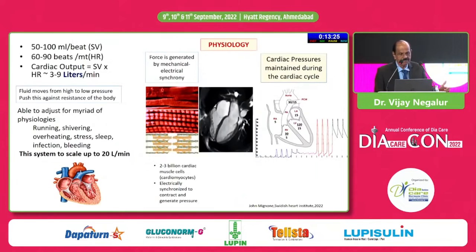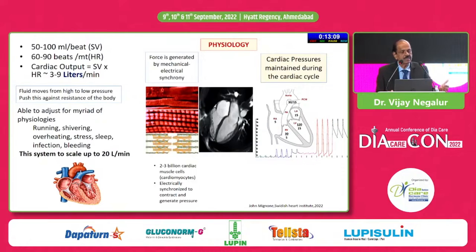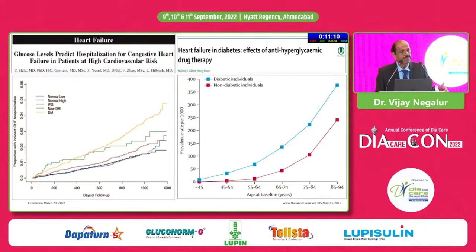Looking at cardiac physiology, stroke volume is 50 to 100 ml and heart rate is 60 to 90 beats per minute, giving a cardiac output of 3 to 9 liters per minute. This can increase up to 20 liters per minute in people who run, have shivering, overeating, stress, sleep disturbances, or infection.